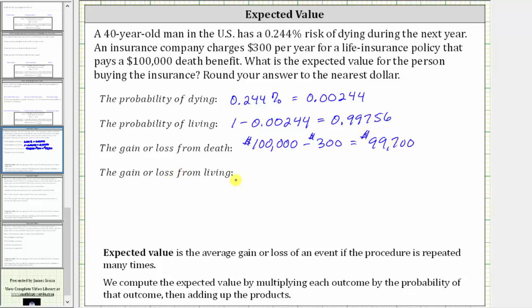And then the gain or loss from living is that they pay for the policy and don't use it, and therefore there's a loss of $300, which we indicate as negative $300.